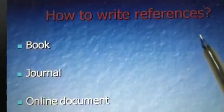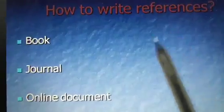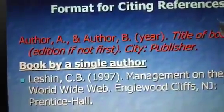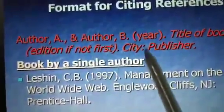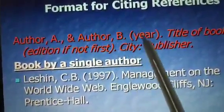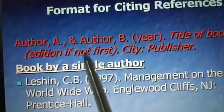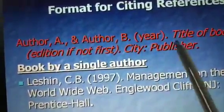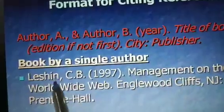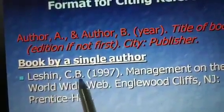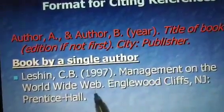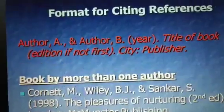How to write references is the next question. Broadly, there are three types: books, journals, and online documents. For a book with dual authors, you write: first author, then second author, year of publication, title of the book, edition, and publisher name. For a single author, you write, for example: Latian C.B., 1997, 'Management of the World Wide Web,' Angel Woods, Cliffs Publications, Prentice Hall Publishers.